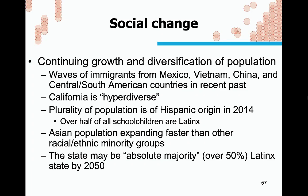California continues growing and diversifying its population, with waves of immigrants from Mexico, Vietnam, China, and South and Central American countries. A plurality of the population is of Hispanic origin as of 2014; over half of all school children are Latinx. The Asian population continues to grow — in the decade after the 2008-9 economic crisis, Asians were actually the largest group migrating to the United States. The state may reach an absolute majority Latinx population by 2050 — a big change from the Chinese Exclusion Act era.